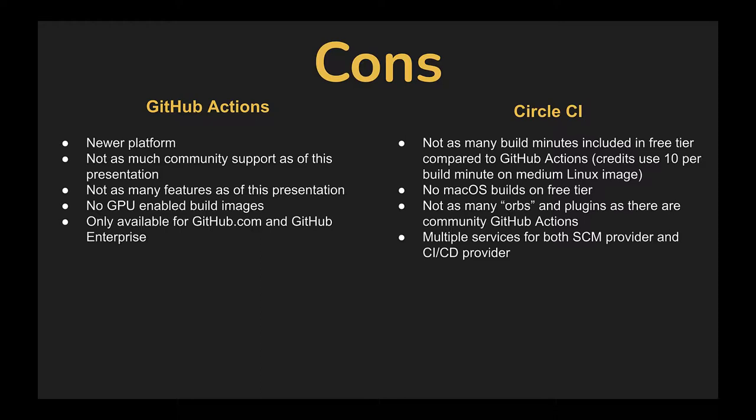As for the cons for CircleCI: there are not as many build minutes included in the free tier compared to GitHub Actions. You get 2,500 credits per week, but the default medium Linux Docker image uses 10 credits per build minute, so you only get about 250 minutes per week. Using Windows or larger Linux images reduces that further. They do not offer macOS builds on the free tier at all, so if you need macOS, GitHub Actions is more up your alley. CircleCI also doesn't have as many plugins or orbs as the GitHub Actions community marketplace, and you have to use and pay for two different services for source code management and CI/CD.